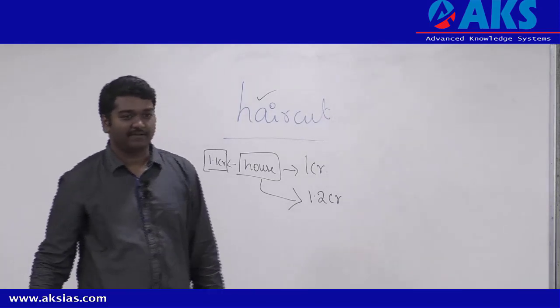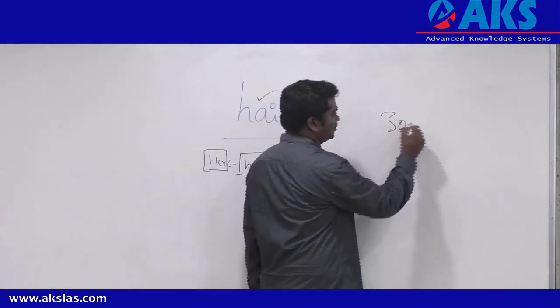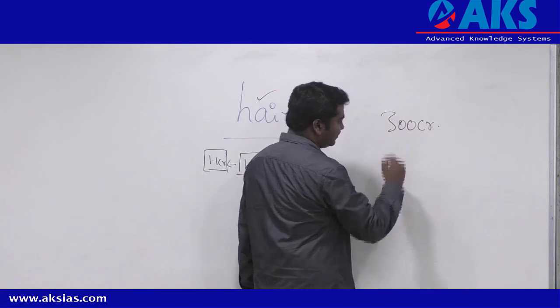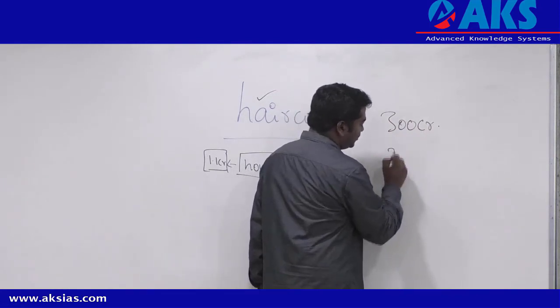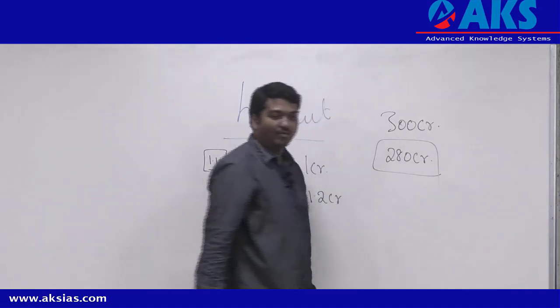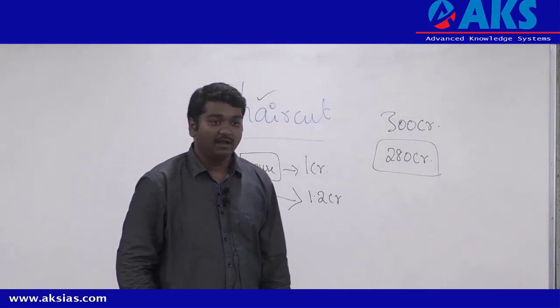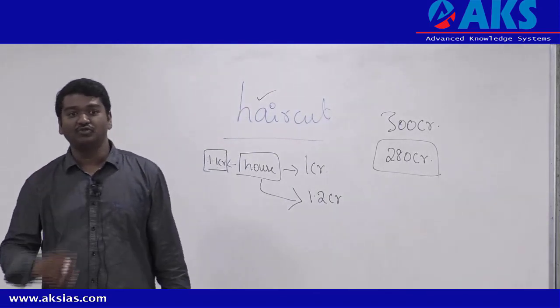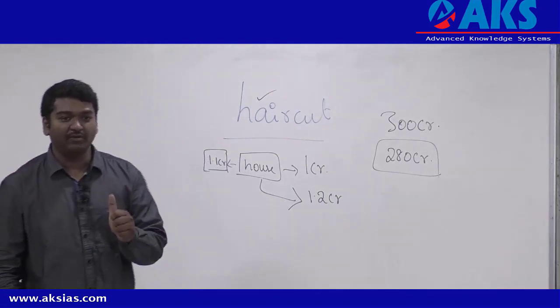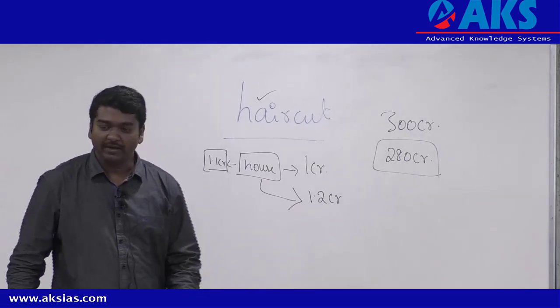Malya's case is there. In Malya's case, Malya has to pay me, let's say, 300 crores. And his property is worth 280 crores. Then, how much am I in loss? 20 crores. If I leave 20 crores to Malya, then government in future may ask me, why did you reduce 20 crores to Malya?